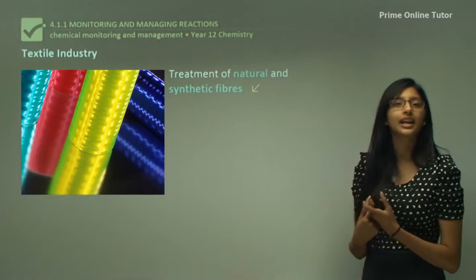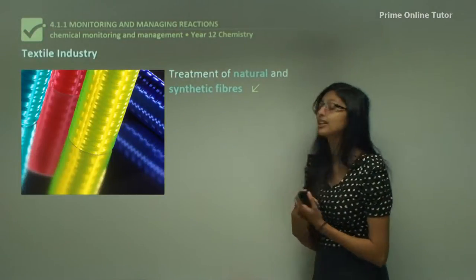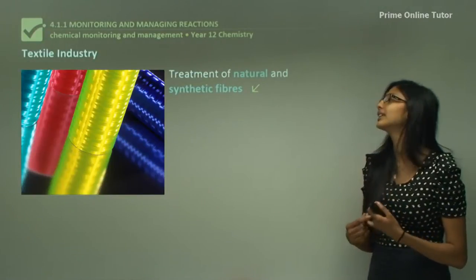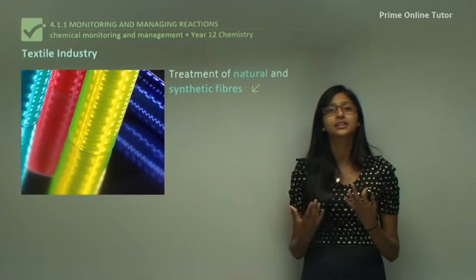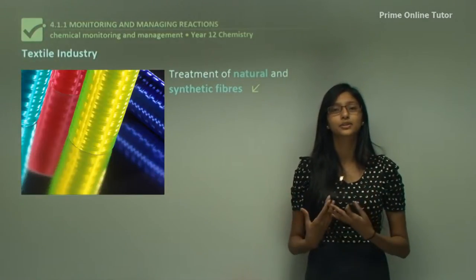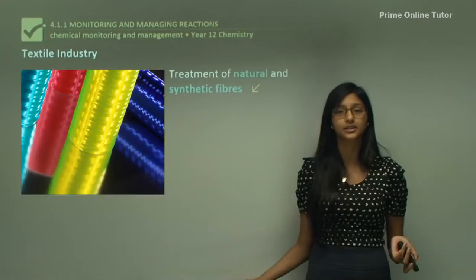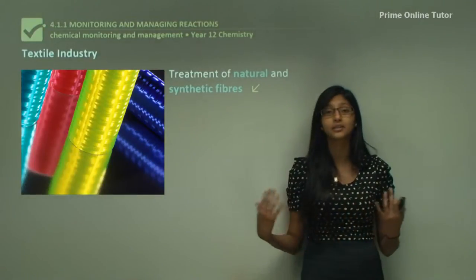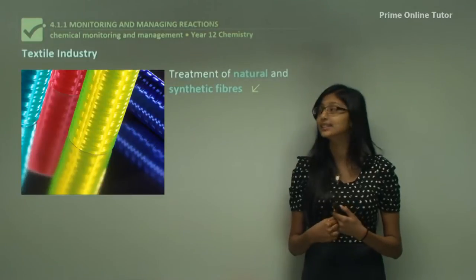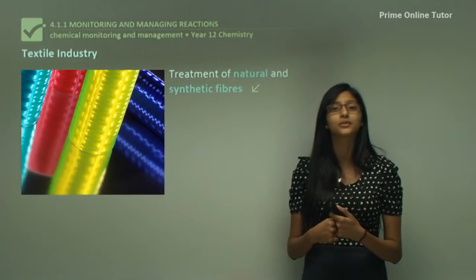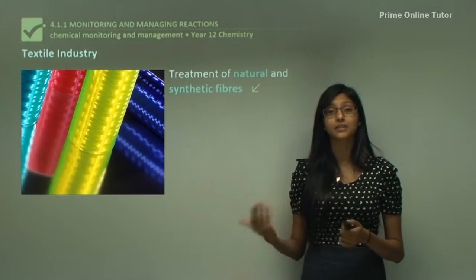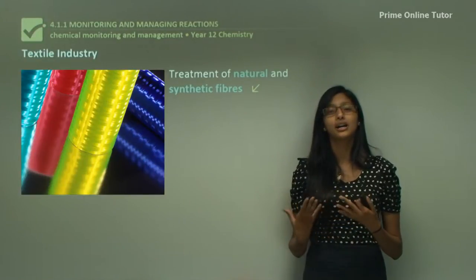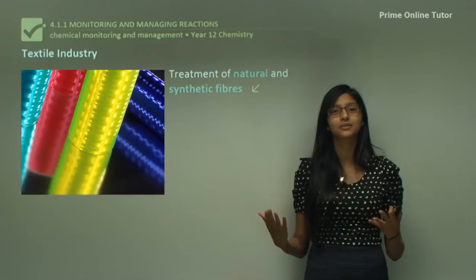Let's look at the textile industry. The textile industry helps us with the treatment of natural and synthetic fibers, manufacturing the fibers that are used to make different kinds of clothes for the fashion industry. So we have looked at a very different range of industries, and each industry provides very different kinds of products, meaning chemists who work there also have very different kinds of roles.